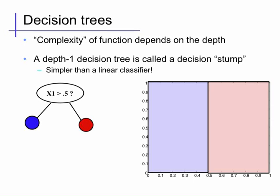The complexity of a decision tree depends on the depth of the tree. A depth-one decision tree, often called a decision stump since it's cut off at the root, is an extremely simple classifier. We look at only one feature, compare it to some threshold, and output one value if false and another if true. In a two-dimensional feature space x1, x2, this leads to functions that partition the space either left-right or top-bottom into two different classes.